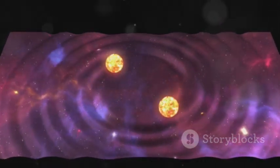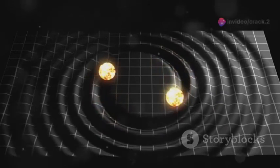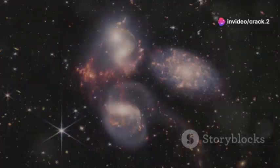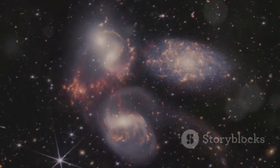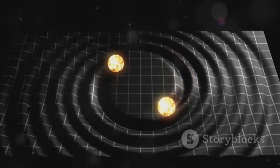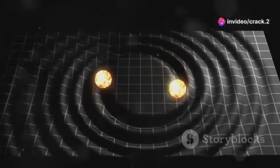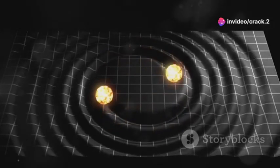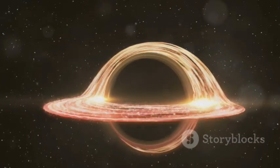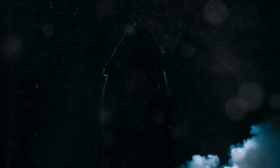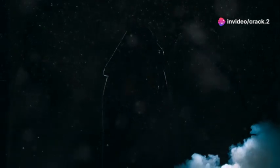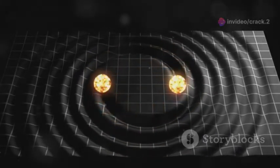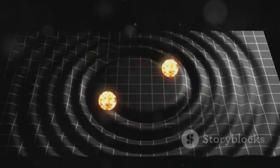Gravitational waves are produced by some of the most violent and energetic events in the universe. These include the collision of black holes, the merger of neutron stars, and the explosive deaths of massive stars in supernovae. As these objects accelerate and spiral inward towards each other, they disrupt the fabric of space-time, sending out gravitational waves like ripples from a stone dropped in a pond. The strength of these waves depends on the mass and acceleration of the objects involved. The more massive and the faster they accelerate, the stronger the gravitational waves they produce. These waves carry with them a wealth of information about the objects that created them, providing us with a unique window into the most extreme environments in the universe.